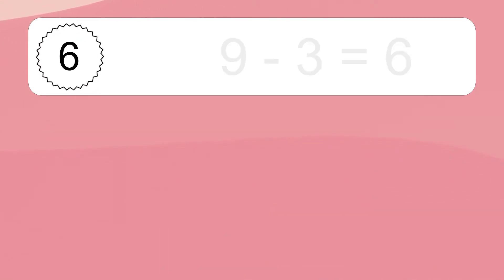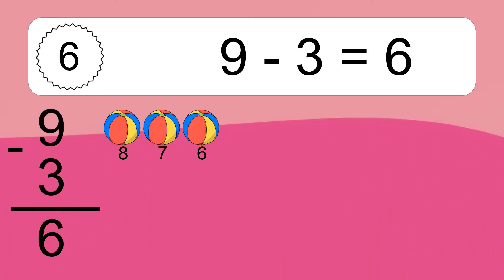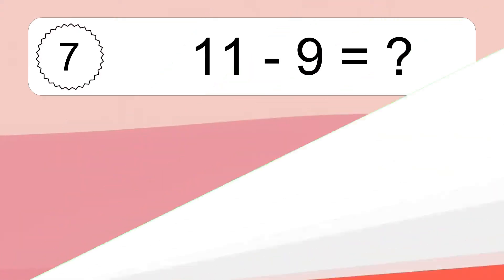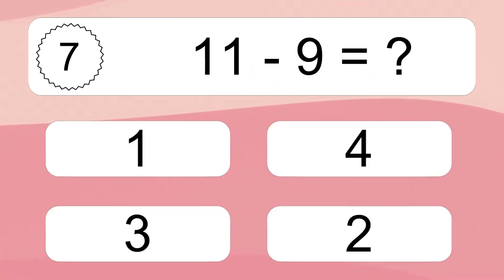9 minus 3 equals what? 9 minus 3 equals 6. Let's count it: 8, 7, 6.